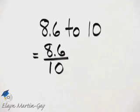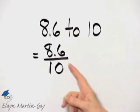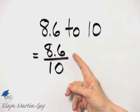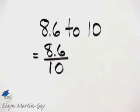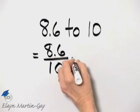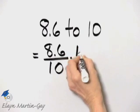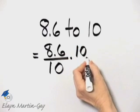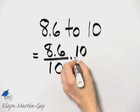If I multiply the numerator by 10, that moves the decimal point one place to the right. So I'm going to multiply the numerator by 10 so that it is no longer a decimal number.